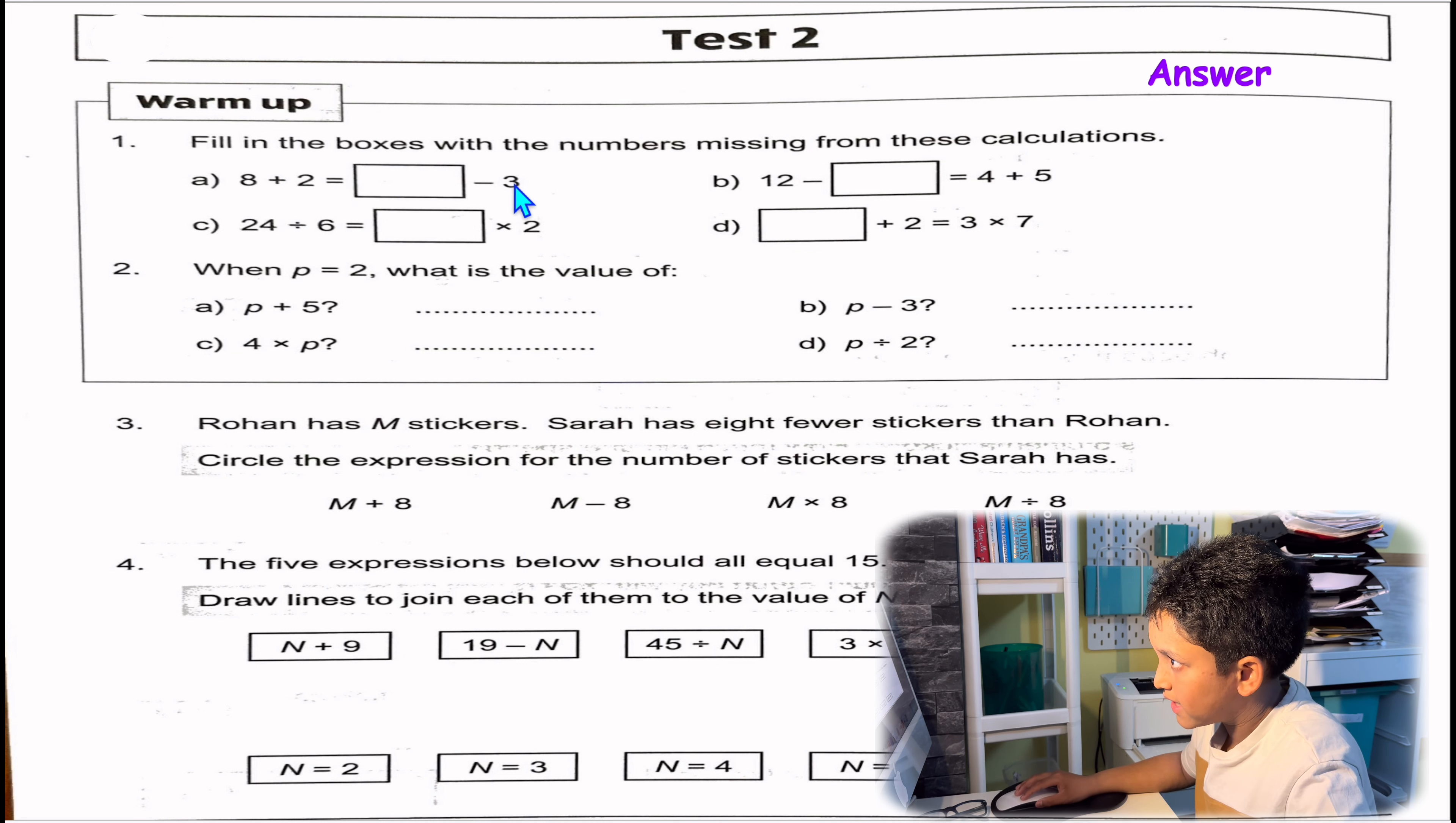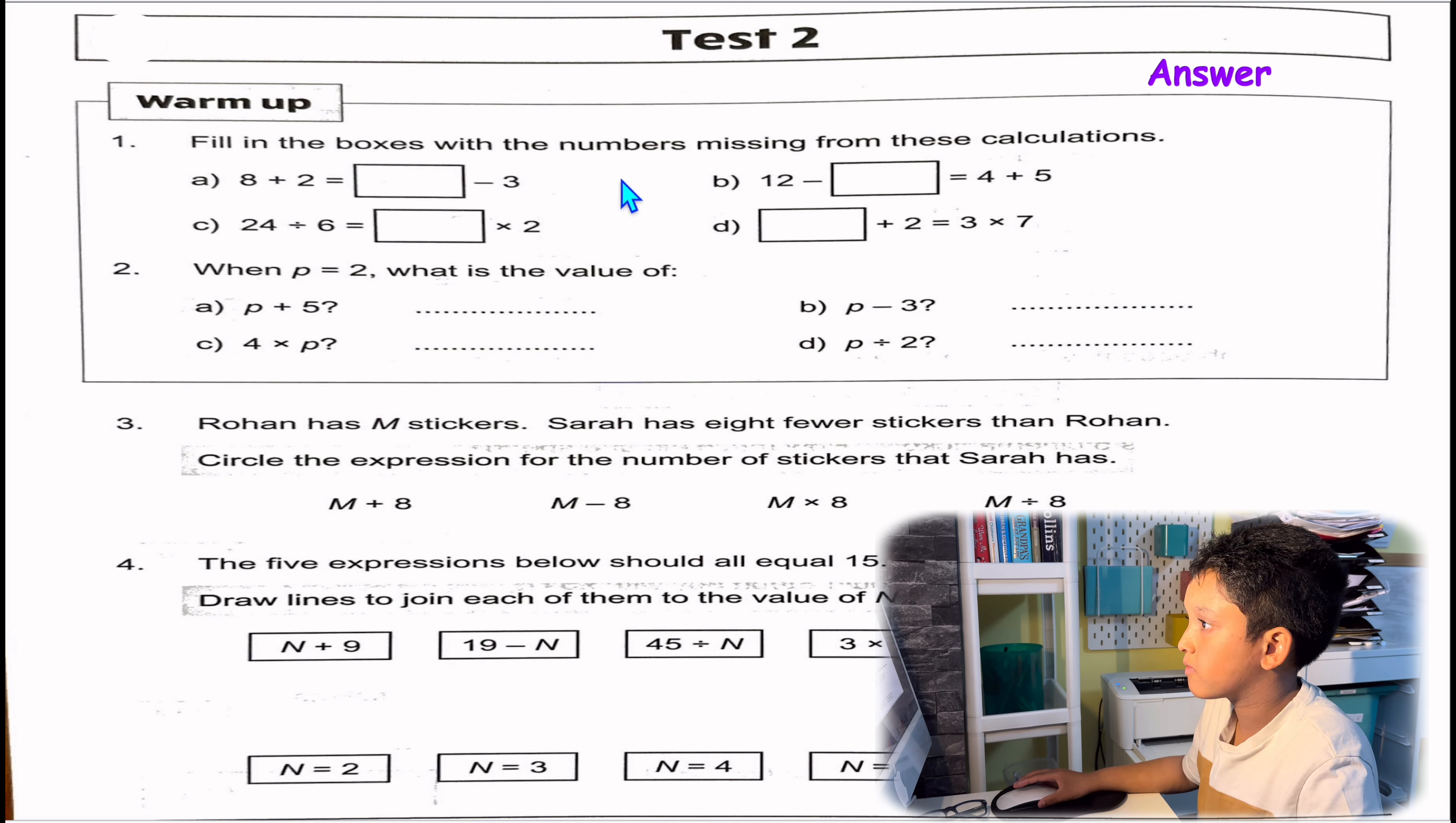If we want to find that something, we need to add 10 to 3, because you're taking away to get 10. 10 plus 3 is 13.